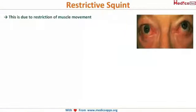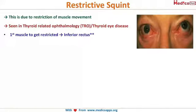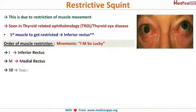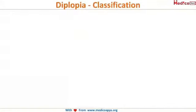Now let's look at restrictive squint. This is due to restriction of muscle movement, and the most common cause is thyroid-related ophthalmopathy. The first muscle to get restricted in thyroid-related eye disease is the inferior rectus, followed by medial rectus, superior rectus, and then lateral rectus. The mnemonic is 'I Am So Lucky' — that's the order of muscles affected in thyroid eye disease causing restrictive squint.